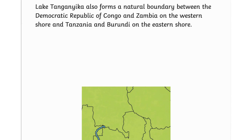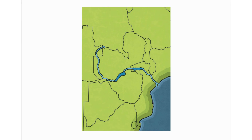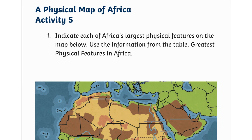Lake Tanganyika also forms a natural boundary between the Democratic Republic of Congo and Zambia on the western shore, and Tanzania and Burundi on the eastern shore. That concludes our physical map of Africa.